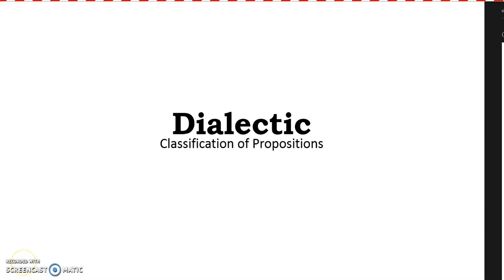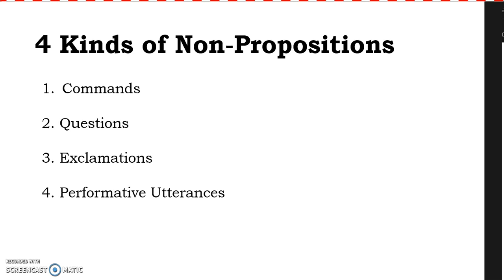This is the Three Arts Workshop. In the second week of Dialectic, we're thinking about classification of propositions. Before thinking about the kinds of propositions that exist, it's helpful to think about four kinds of non-propositions — four kinds of human utterance which don't propose anything, which don't make any judgment about reality: commands, questions, exclamations, and performative utterances.